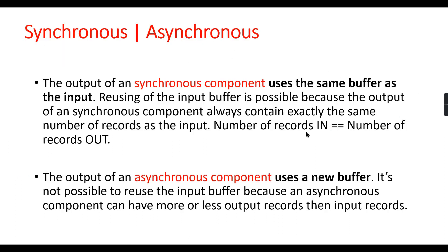Synchronous means the output of a synchronous component uses the same buffer as the input. For example, the Copy Column transformation gets the input and throws the same number of rows, reusing the same buffer. The output of a synchronous component always contains exactly the same number of records as the input — if you get 100 records in, you get 100 records out with a new column added.